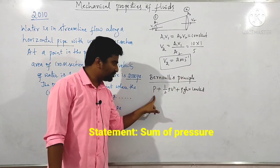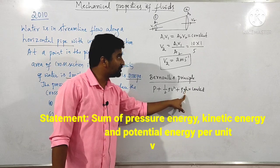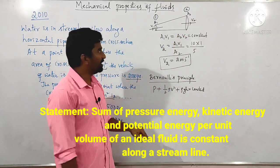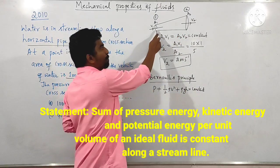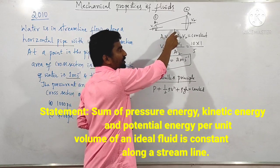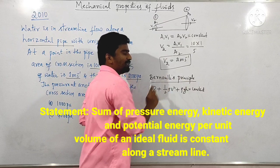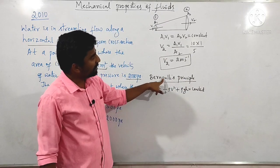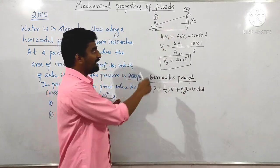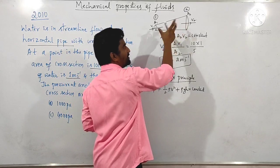Applying Bernoulli's theorem: the sum of pressure energy, kinetic energy, and potential energy along the streamline is constant. Since the pipe is horizontal, h₁ = h₂ and the potential energy terms cancel out.